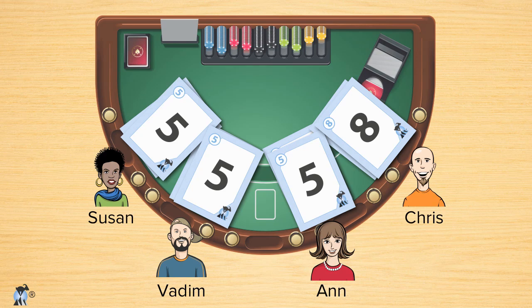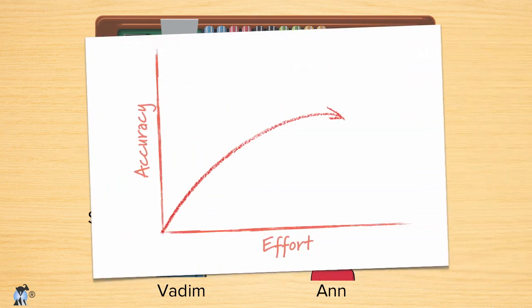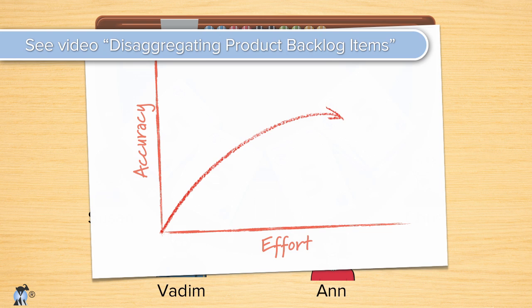The consensus may be a little false, but that's okay. Suppose we go another two or three rounds with Chris holding up an 8 while the rest of us have fives. At that point, I'd ask Chris if he thinks we've heard his arguments but that we just disagree. If he does think we've heard him, he will eventually fold and hold up a 5. I'm okay with Chris folding — the difference between 8 and 5 isn't that great, and we're pretty far up the effort accuracy curve we saw a few minutes ago.